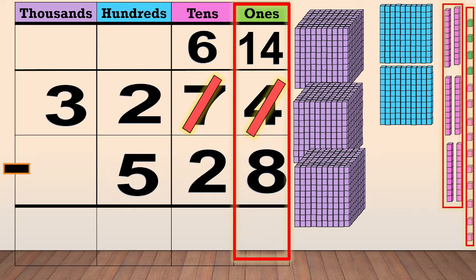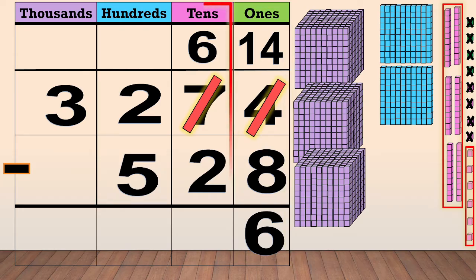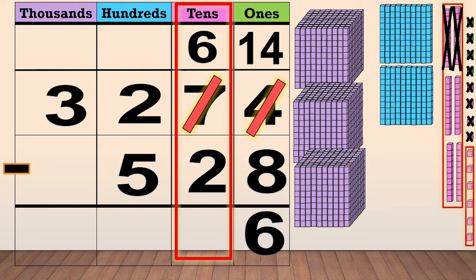Next, we subtract the ones: 14 minus 8 equals 6. Then, we subtract the tens: 6 minus 2 equals 4.